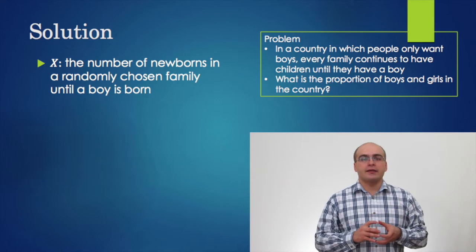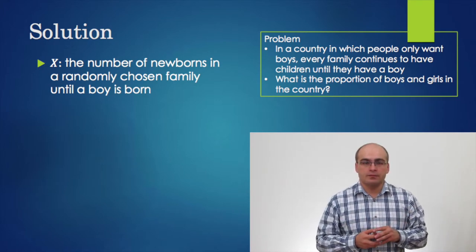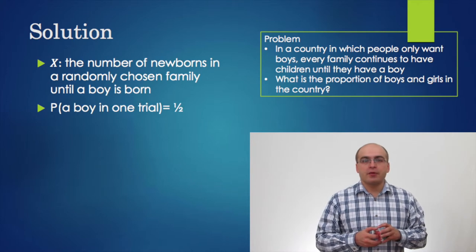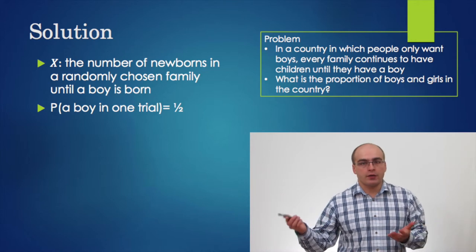Well, then x is actually a geometric random variable. In each trial, the probability of a boy is one half.